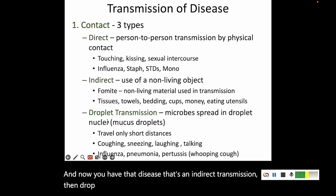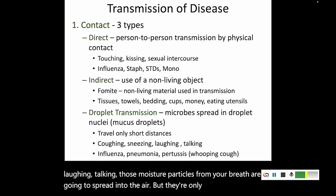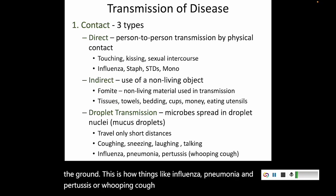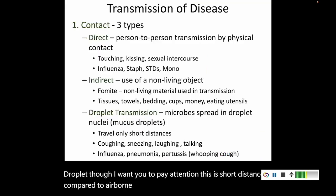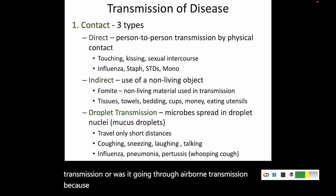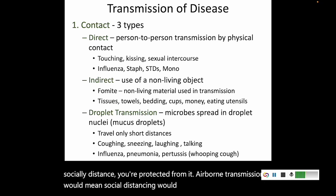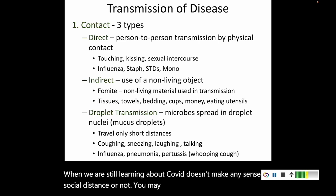Droplet transmission is when the disease travels on a drop of moisture — coughing, sneezing, laughing, talking — those moisture particles spread into the air but only go short distances because gravity quickly pulls them to the ground. This is how influenza, pneumonia, and pertussis (whooping cough) can spread. Droplet transmission is short distance compared to airborne, which travels much farther. This was a big debate during COVID — was it spreading through droplet or airborne transmission? Because droplet means a mask and social distancing protect you, while airborne means social distancing would have no effect.